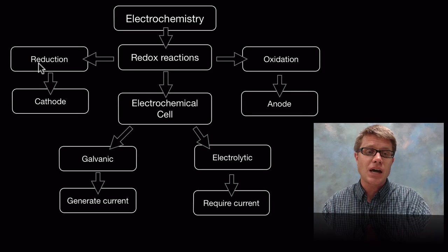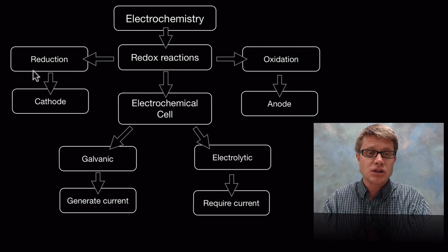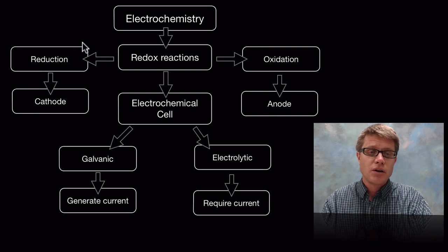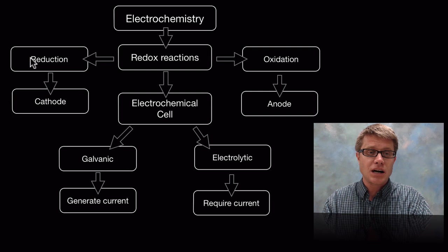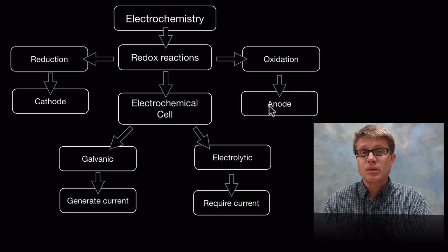Now the metal is either a cathode or an anode. And a quick way to remember that is the reduction always occurs at the cathode and oxidation at the anode. Or a better way to remember that is that the consonants R and C are going to pair, and the vowels, the O and the A, are going to pair as well.